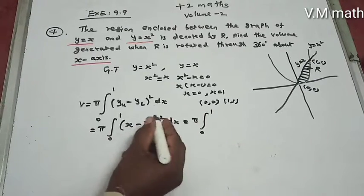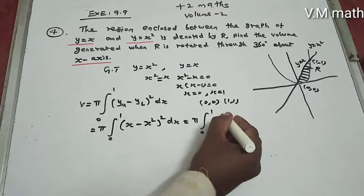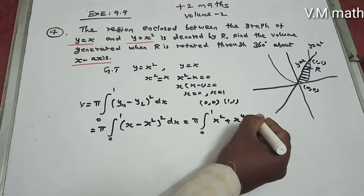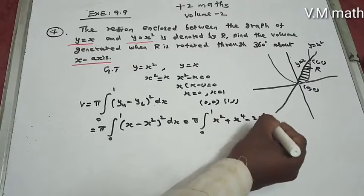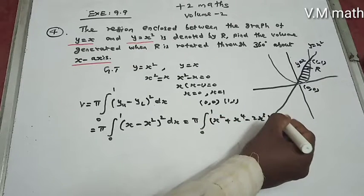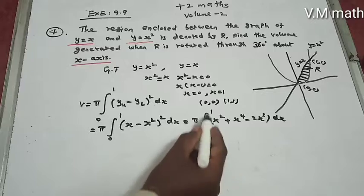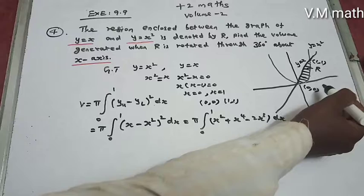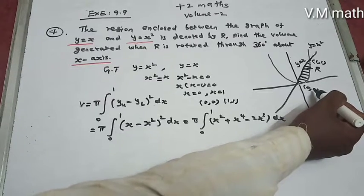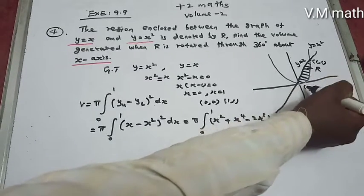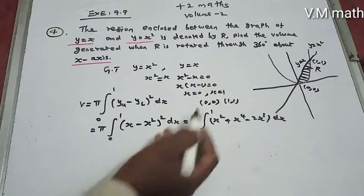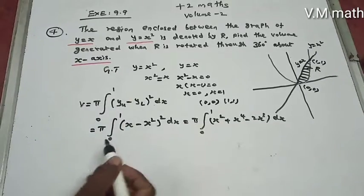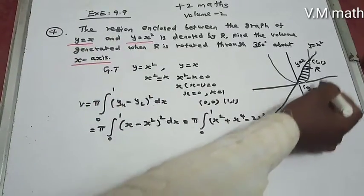This equals π times integral 0 to 1 of (x squared plus x to the power 4 minus 2x cubed) dx. Here is the integration, so limit 0 to 1. Here (0,0) and (1,1) are the two intersection points. The x coordinate is 0 and x coordinate is 1, so x equals 0 and x equals 1. That's the limit because we're rotating about the x-axis. If rotating about the y-axis, we would use the y coordinate.